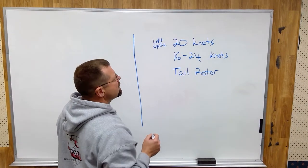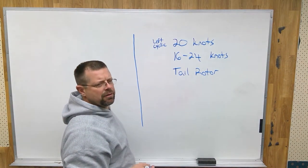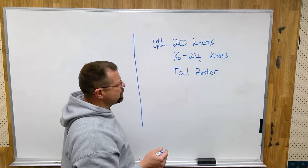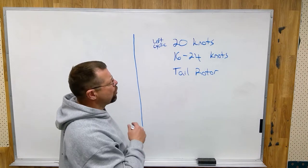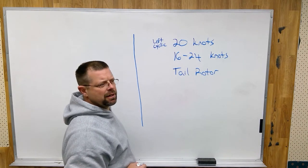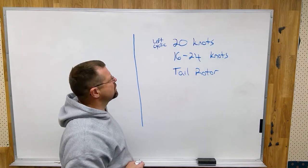16 to 24 knots, greater angle of attack for the same angle of incidence because reduced induced flow, increased angle of attack, whole rotor system is operating in clean air. The helicopter is going to want to climb because it has all this additional lift.